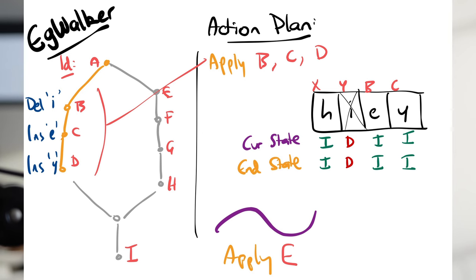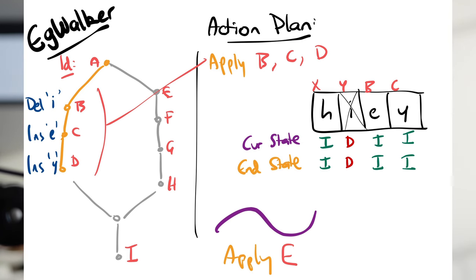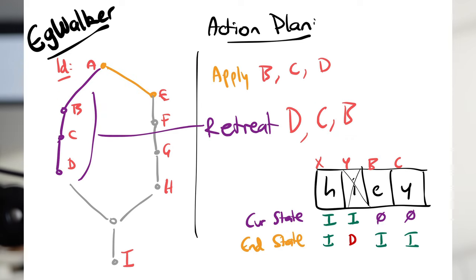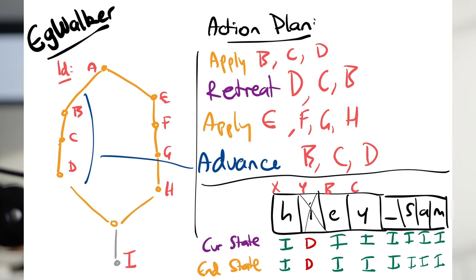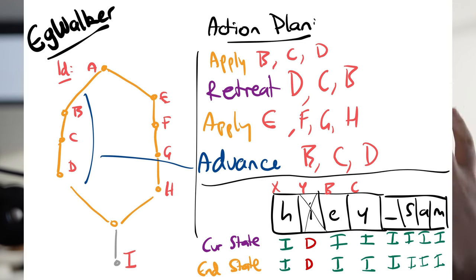We've got three different actions we're going to perform. First, apply actions, which just modify the CRDT based on some set of operations in the graph. Then we've got retreat operations, which kind of undo the effect of some changes, some events on that graph. And we've got advance. Retreat and advance are opposites of each other — if you retreat and then advance, it has no effect.